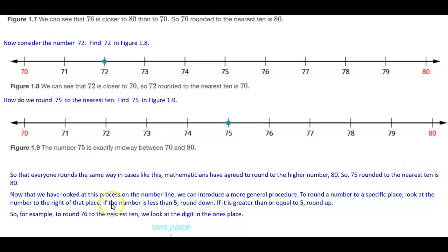Now that we have looked at this process on the number line, we can introduce a more general procedure. To round a number to a specific place, look at the number to the right of that place. If the number is less than 5, you round down. If it is greater than or equal to 5, then you round up.